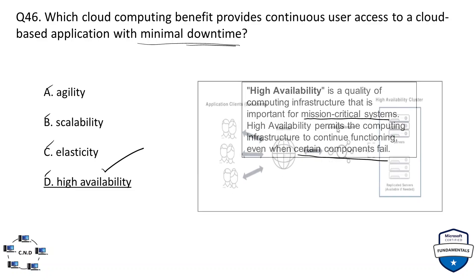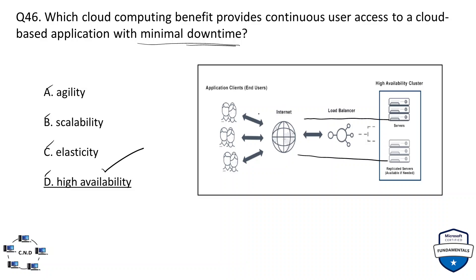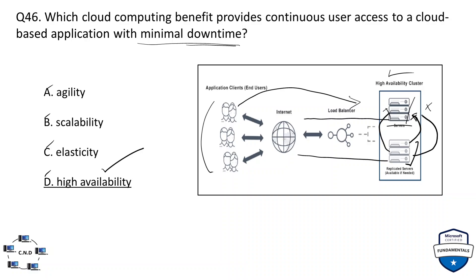Here is an explanation in the form of a diagram. If users are accessing an application through the internet and one server in the cluster fails, we have replicated servers that can take its place. If that server also fails, another server steps in. This concept is high availability — you have redundant resources so that if any server in your cluster fails, there is no impact on user performance.